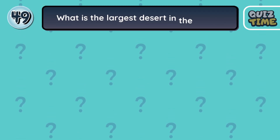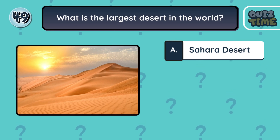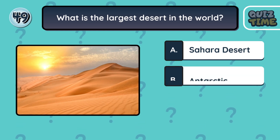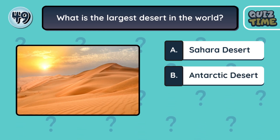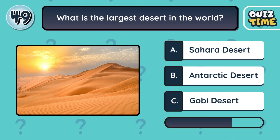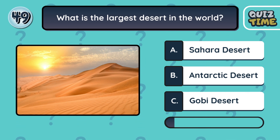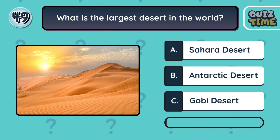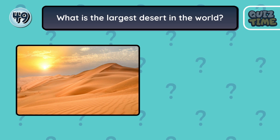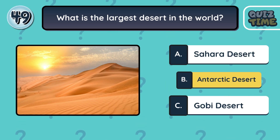Number 49. What is the largest desert in the world? A. Sahara desert. B. Antarctic desert. C. Gobi desert. The correct answer is B. Antarctic desert.